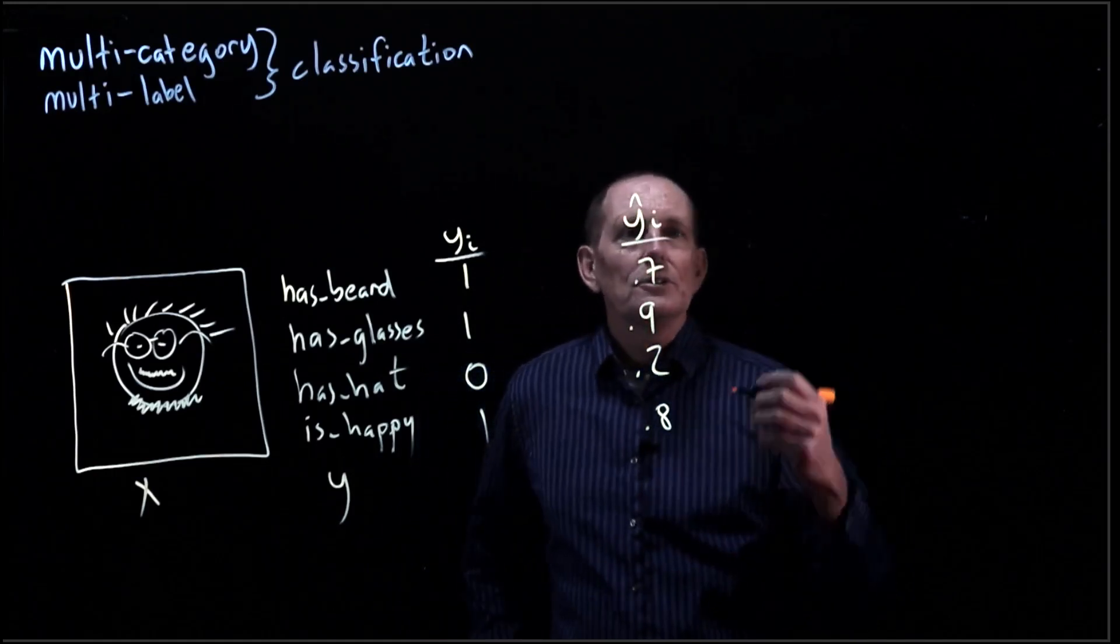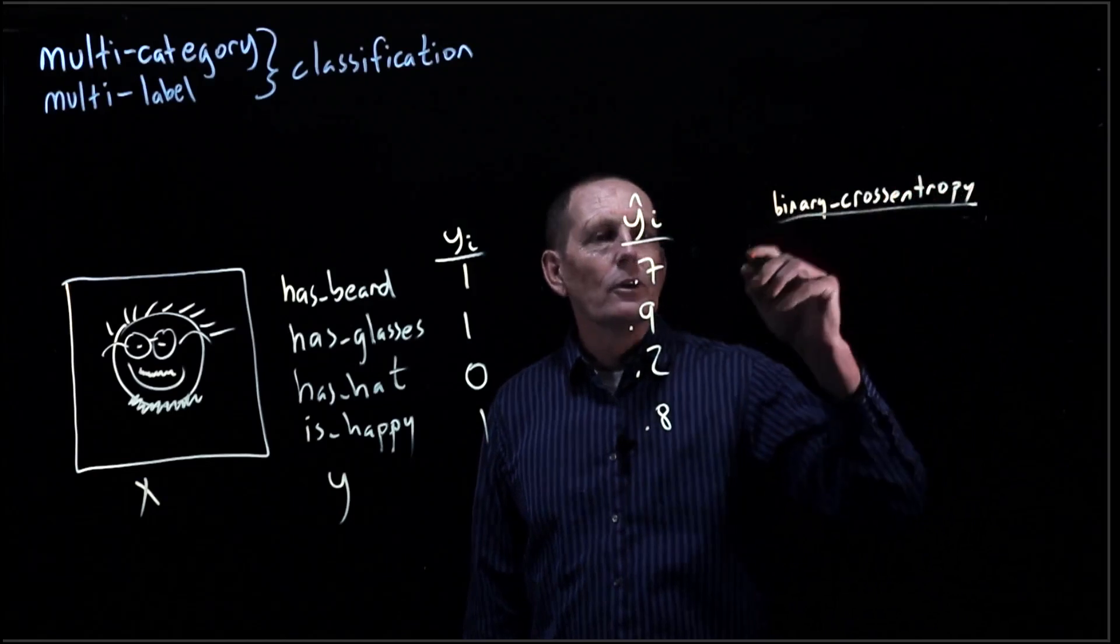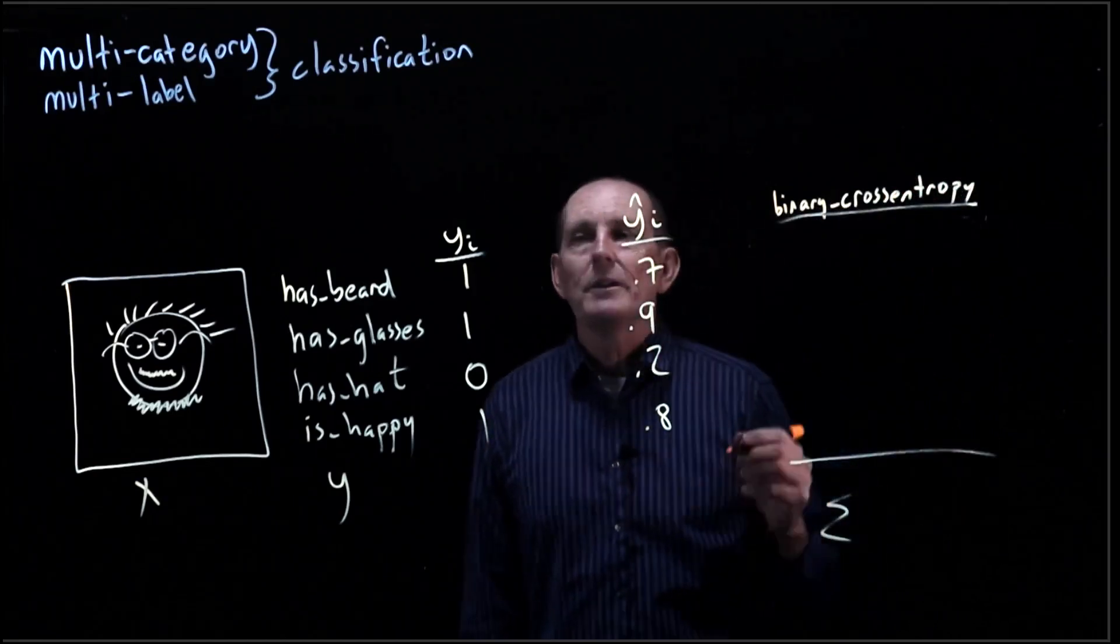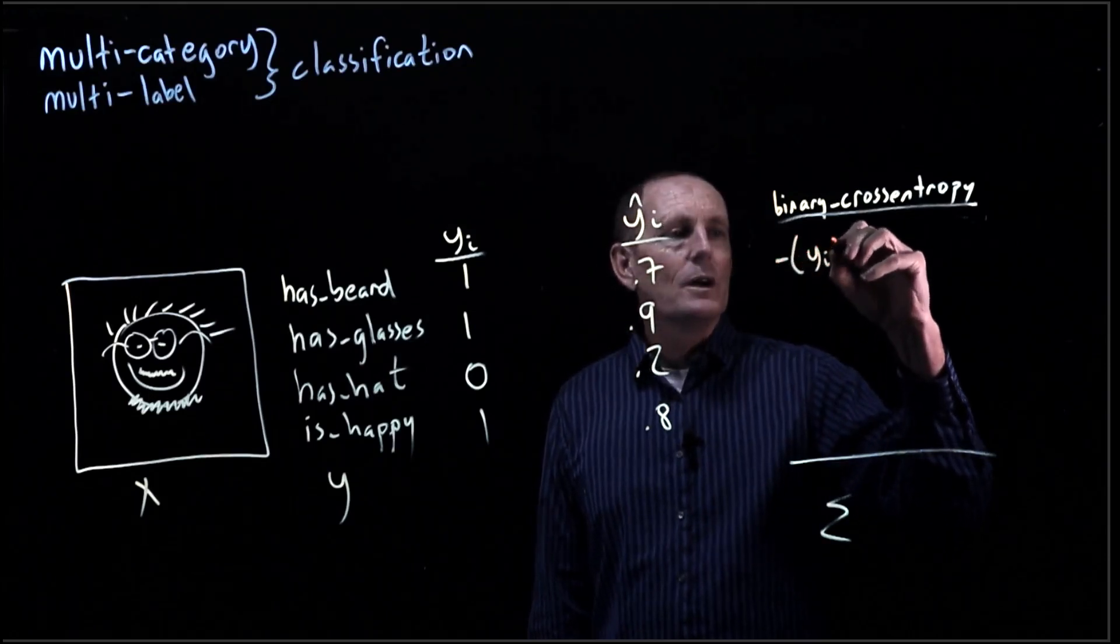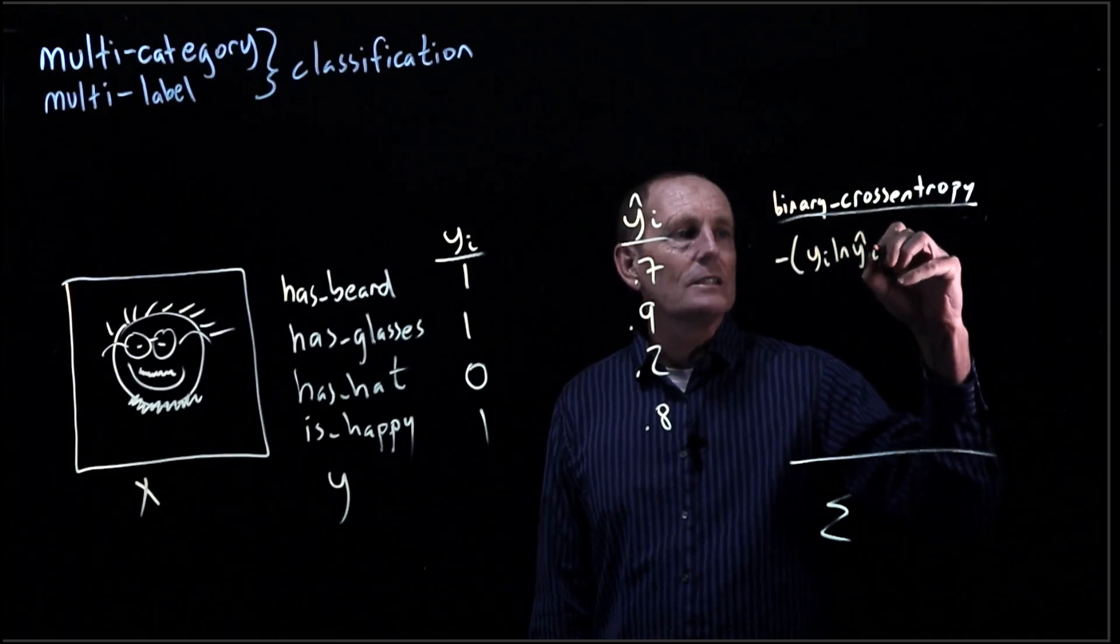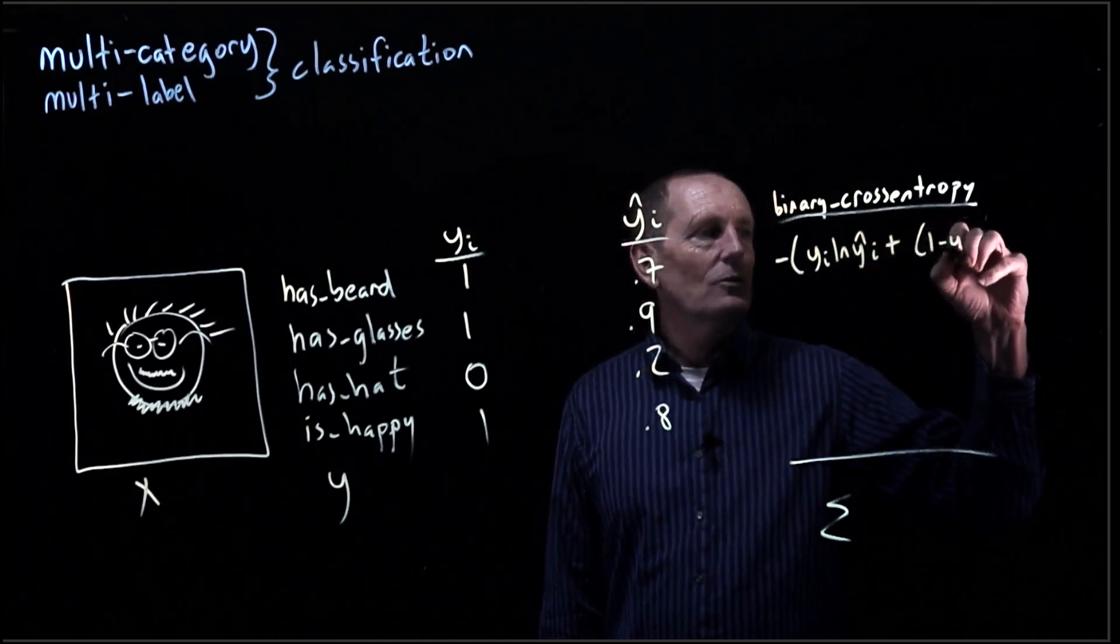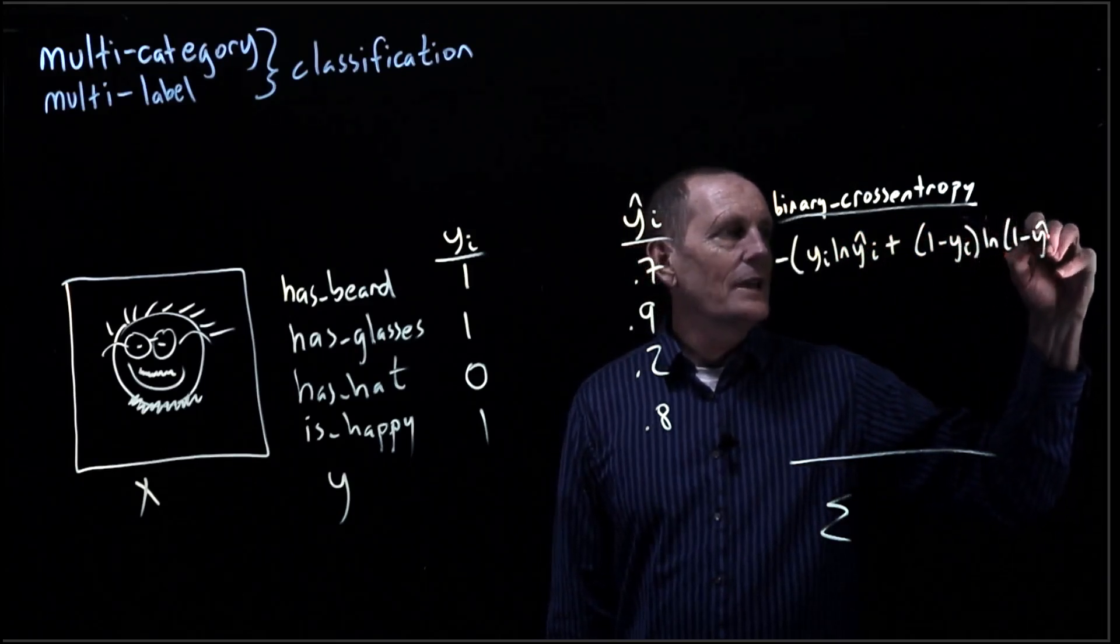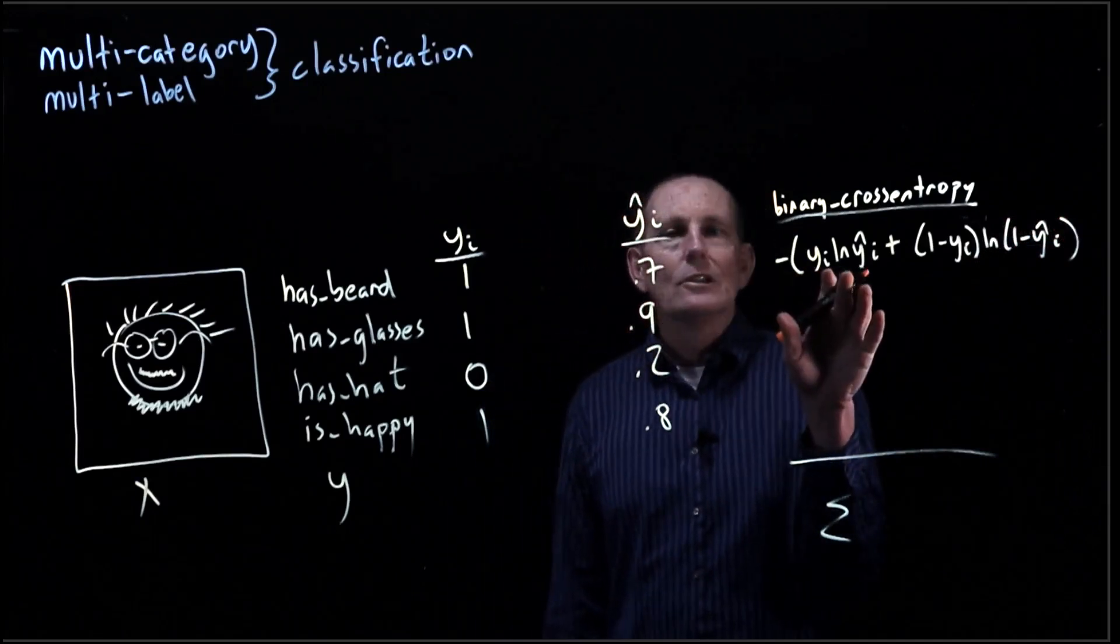So what we'll do is we'll use the binary cross entropy for each of these and then sum them together. Remembering that the binary cross entropy is minus y sub i log of y hat sub i plus 1 minus y sub i log of 1 minus y hat sub i.